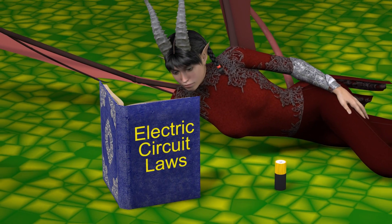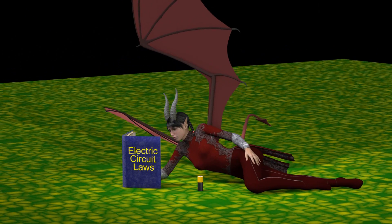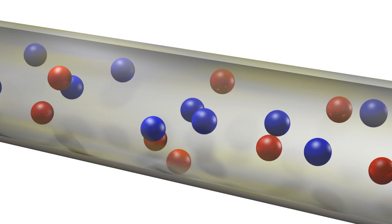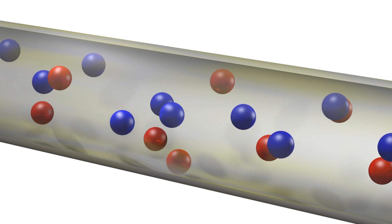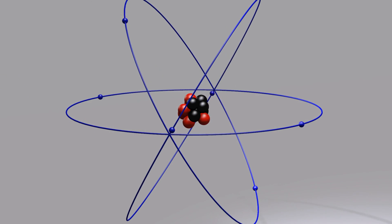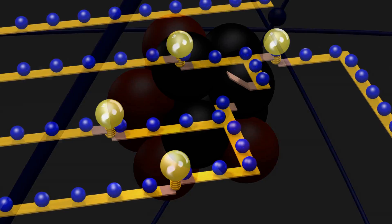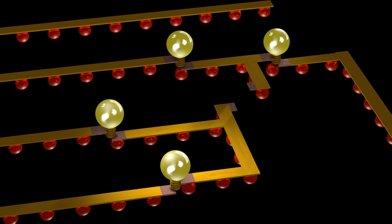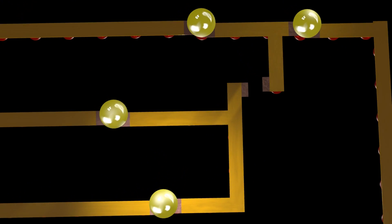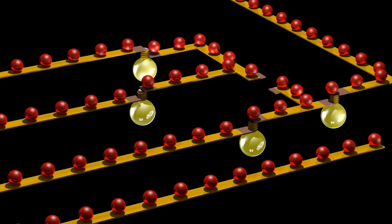Before we begin, let us first review the convention regarding current flow, as this causes a lot of confusion. In an electric circuit, it's the negatively charged electrons that are free to move around, while the positively charged protons are fixed in place in the nuclei of the atoms. However, this fact was not known when electricity was first discovered, and it was incorrectly assumed that it's the positively charged particles which are flowing in the opposite direction. The convention for current flow was never updated, and the standard in industry and in education is still to show the direction of this so-called positive current, which is in the opposite direction of the actual electron current.